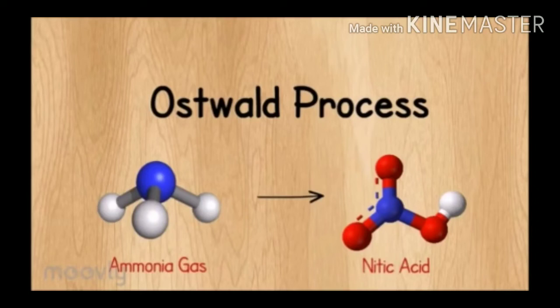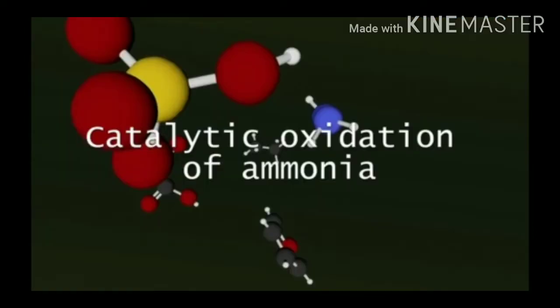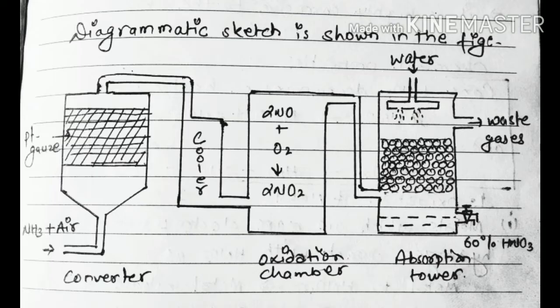Ostwald process. Nitric acid is manufactured by the catalytic oxidation of ammonia. In this diagram, we have 4 chambers: a converter, which is a platinum gauze catalytic chamber, a cooler and oxidation chamber, and an absorption tower.